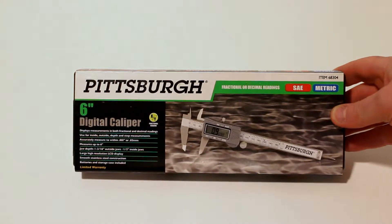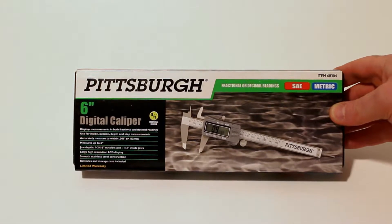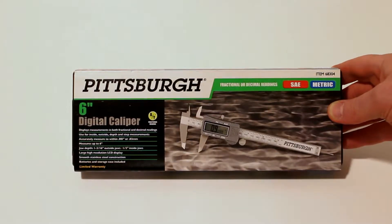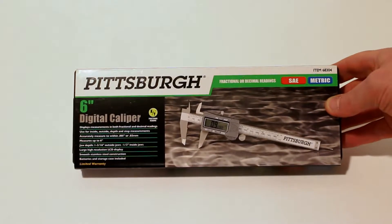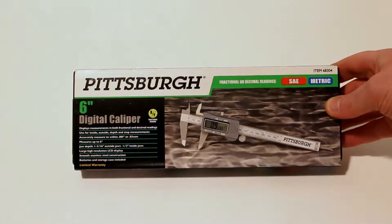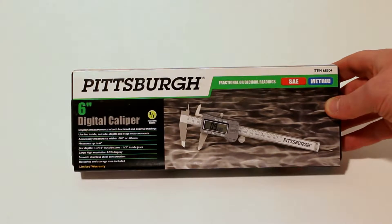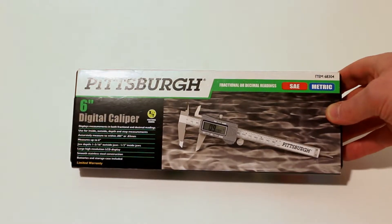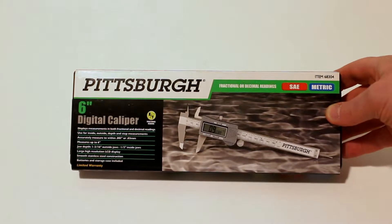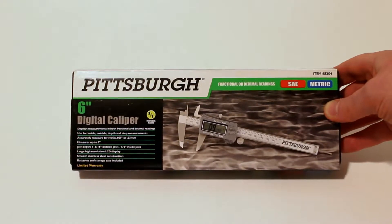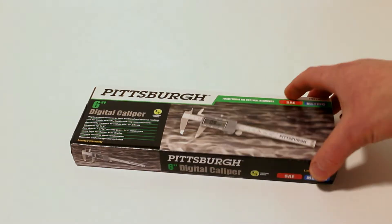This is the $19.99 digital caliper, item number 68304, and it can read things in both SAE and metric. Compared to the $17 version, the major difference is this can do both fractional as well as decimal readings.